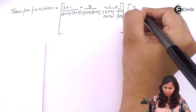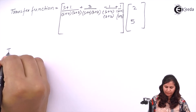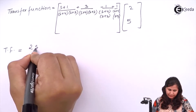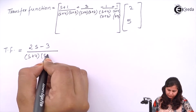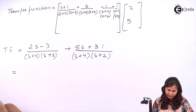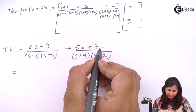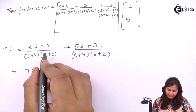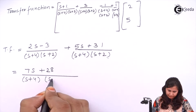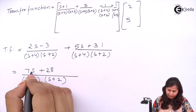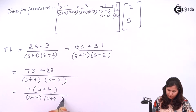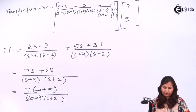Multiplying out, this is multiplied with [2, 5]. The result gives 2s minus 3 in the numerator term, then plus 5s + 31, so combining: 7s and minus 3 plus 31 gives 28 — so numerator is 7s + 28. Taking 7 common gives 7(s+4). The denominator is (s+4)(s+2), so (s+4) cancels out. The transfer function simplifies to 7 upon (s+2).